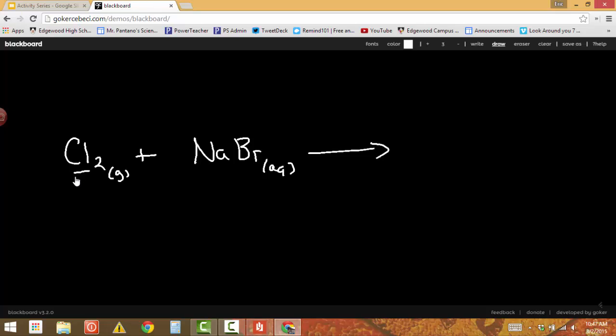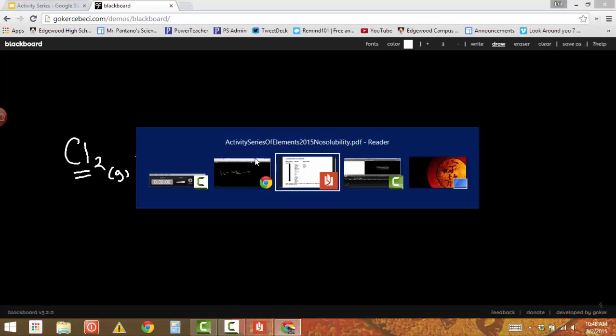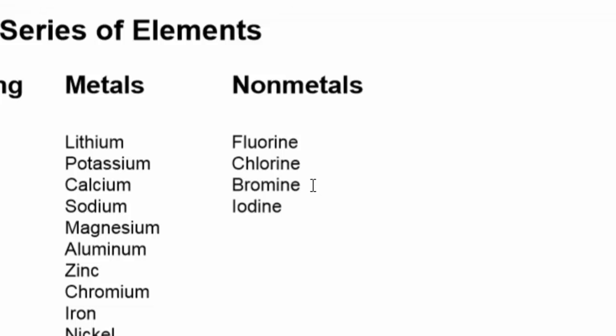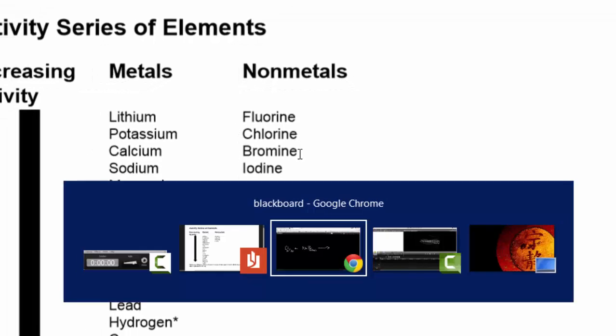The chlorine will replace an element it's similar to. It's not similar to sodium, which is a metal, but it is similar to bromine because bromine is another halogen. Chlorine will replace bromine, but only if it's more reactive. We need to check our list. Chlorine is above bromine on the list, which means it will replace bromine.